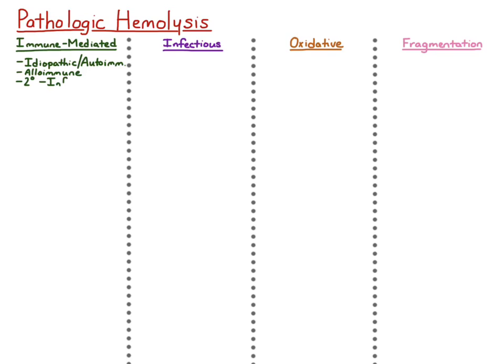Immune-mediated hemolytic anemia can also be secondary to lots of other things, including infections — I'll talk about infections in the next category — as well as drugs that you're administering to patients. Penicillin is a very good example of this. Certain types of neoplasias can also induce autoantibody formation, and a good example of this would be lymphoma.